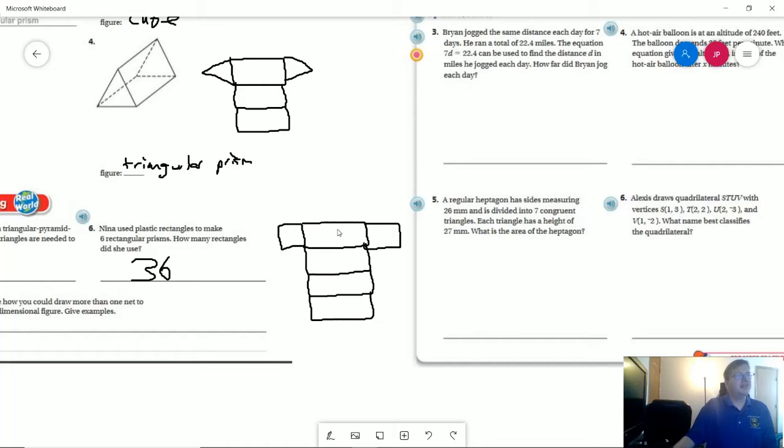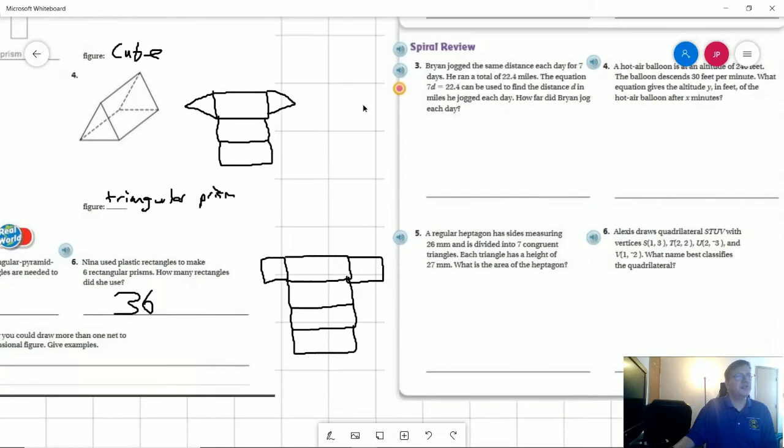But we are going to have one, two, three, four, five, six rectangles per rectangular prism. We are going to have six of these shapes. So that would give us 36 rectangles.